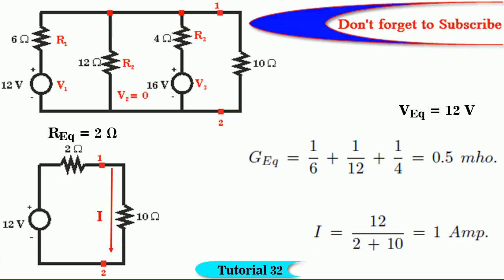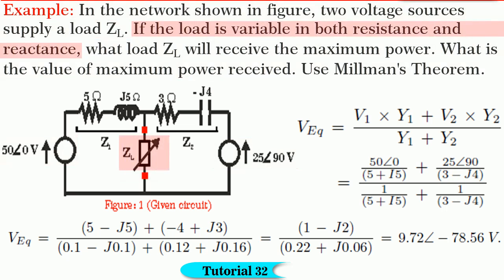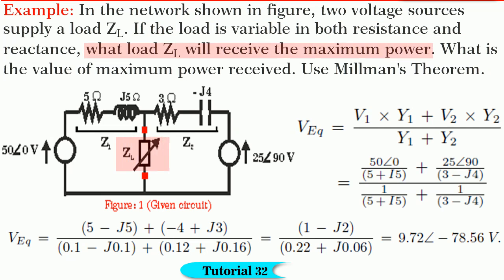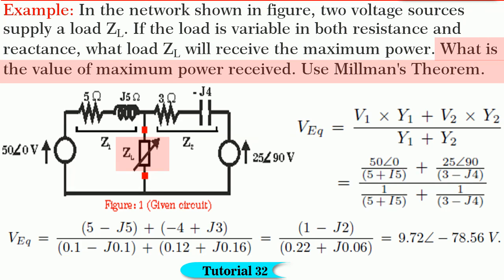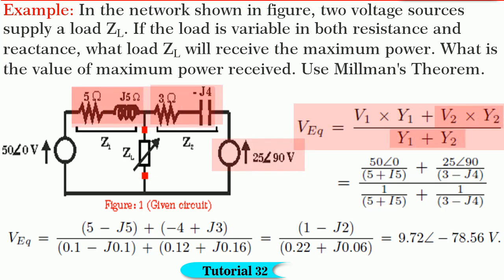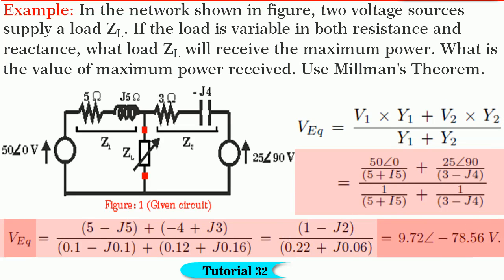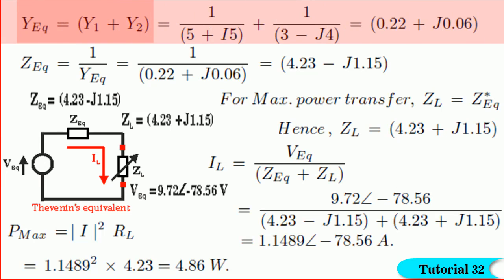Is it not simple, friends? Now let us solve another problem in which two sources supply a common load ZL as shown in figure. ZL is variable, with both resistance and reactance parts varying. We are required to find the value of ZL for maximum power transfer across it, and also the maximum power transferred. Using Millman's theorem: V equivalent = (V1·Y1 + V2·Y2) / (Y1 + Y2). Substituting the values and solving, we get V equivalent = 9.72∠−78.56 volts.